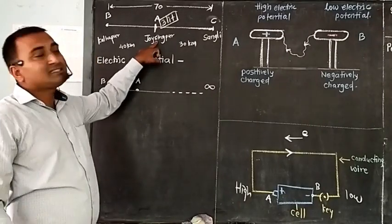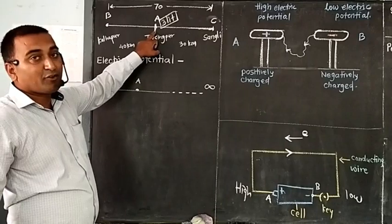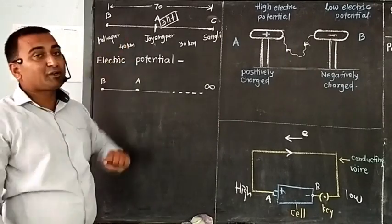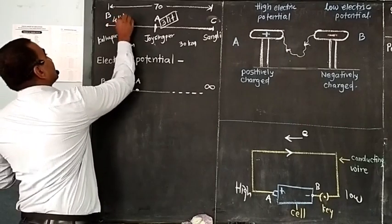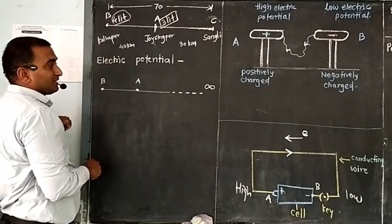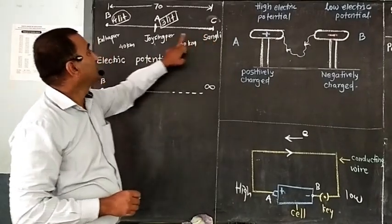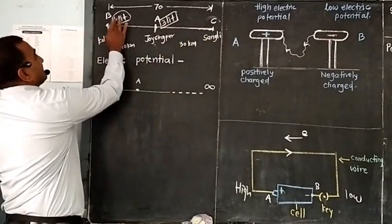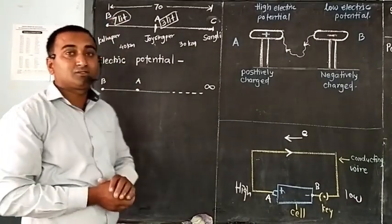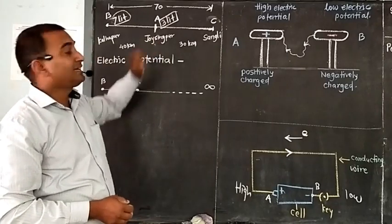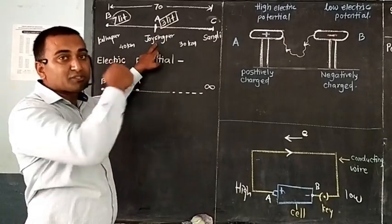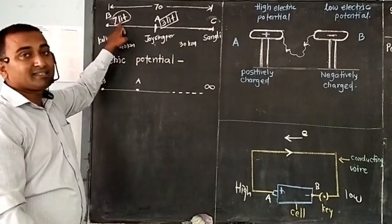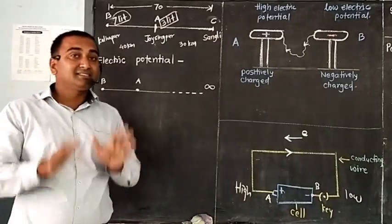Now, the vehicle is in Jaisingpur. You want to transfer it from Jaisingpur to Kolhapur — distance is 40 km, so again we need 4 litres. But consider: if the same vehicle is transferred from Sangli to Kolhapur, it will need 7 litres. So, what is the petrol potential of Jaisingpur? 3 litres. Sangli to Jaisingpur is 3 litres, so Jaisingpur's petrol potential is 3 litres. Sangli to Kolhapur is 70 km, that means 7 litres. That means, petrol potential of Kolhapur is 7 litres.